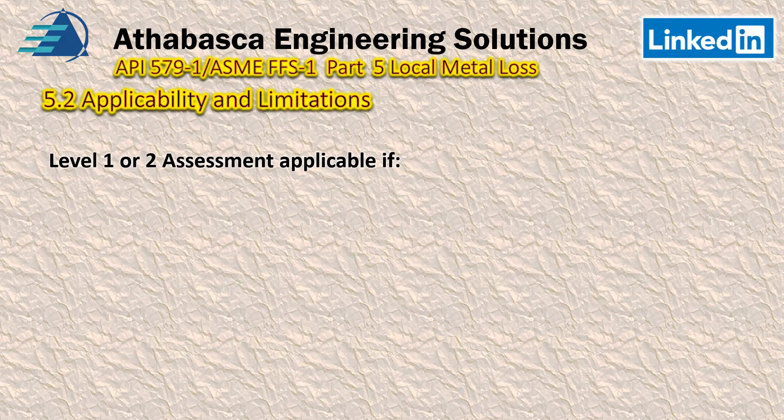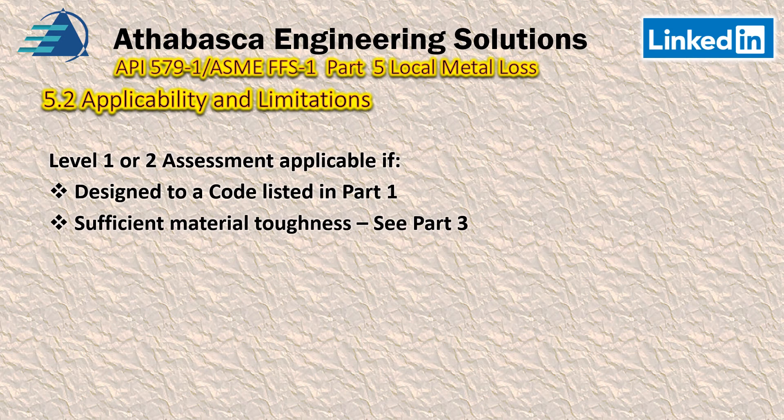Looking a bit deeper into Level 1 and 2 assessments — it's applicable if the design code is listed in Part 1. API 579 is typically applicable only if the component is designed to a recognizable code; otherwise we need to look at deeper assessments. There must be sufficient material toughness in the part, addressed in Part 3 — the MDMT, minimum design metal temperature evaluation — to ensure no brittle fracture cases. This also applies where there is no cyclical service, since the concern is that local metal loss could create a stress riser leading to a crack.